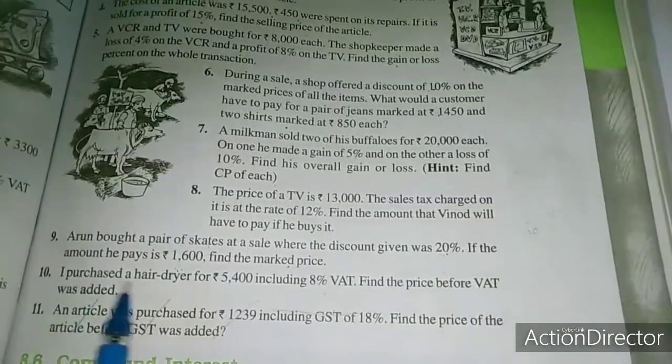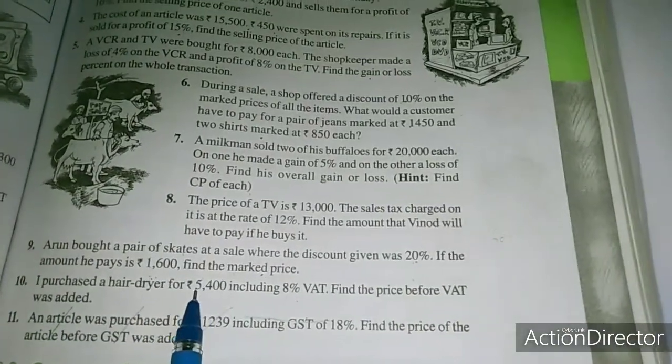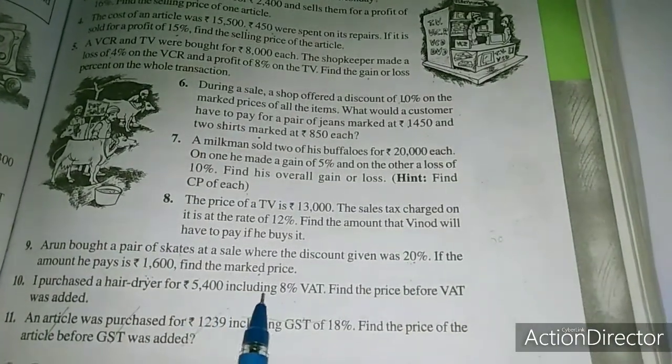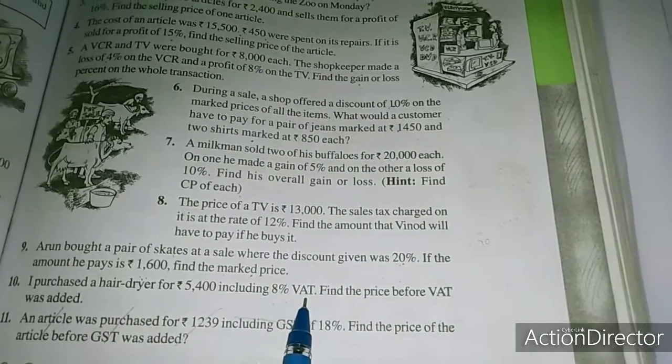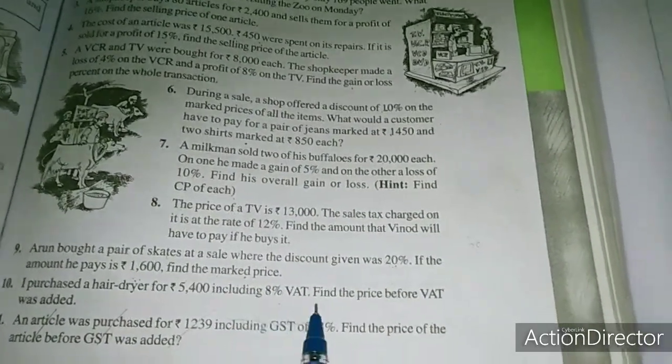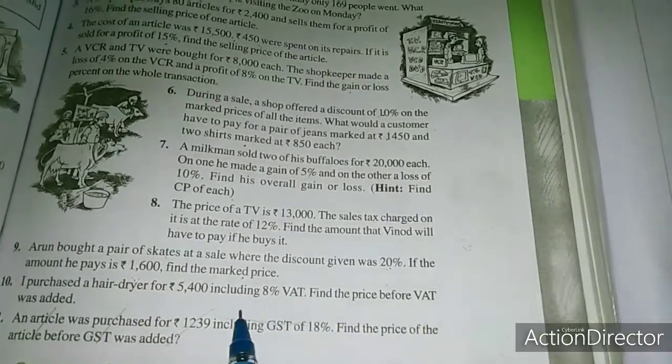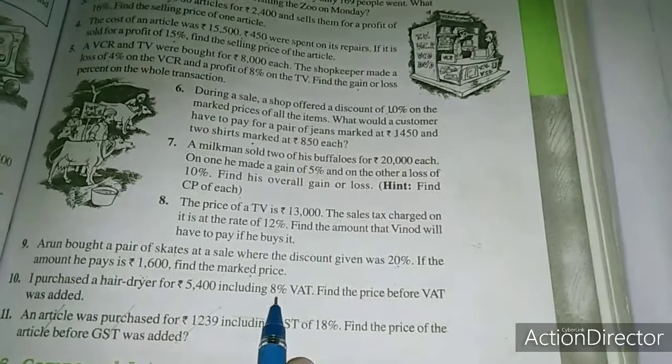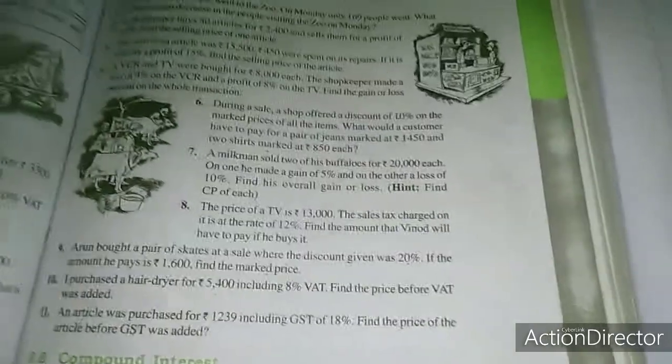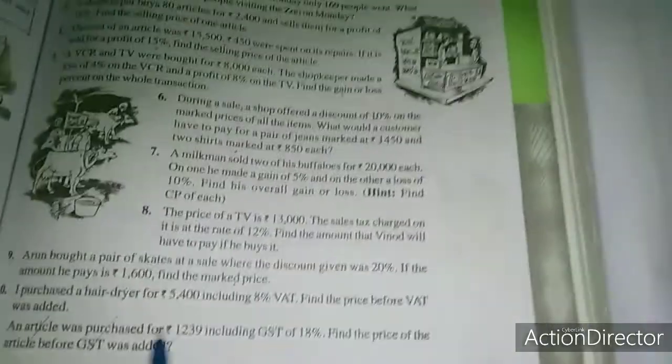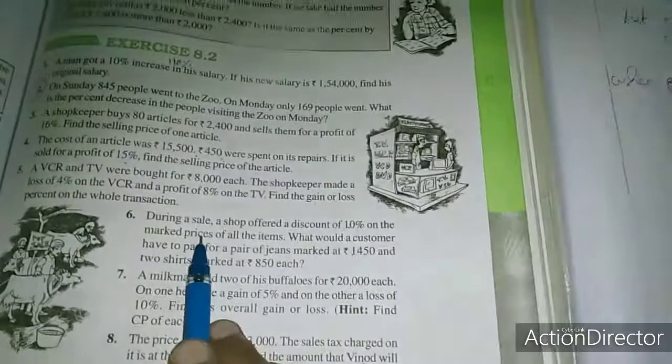Now we will move to problem 10. I purchased a hair dryer for rupees 5,400 including 8% VAT. That is tax. Find the price before VAT was added. This is the cost price. This is similar to problem 6 or 7.